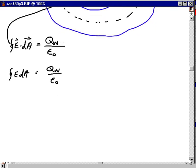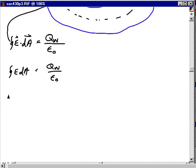But E everywhere on it is one and the same value because all points on it are the same distance from the point charge and from the center of that uniform distribution of the spherical charge inside. So I can just say that I can pull out the E as a constant.